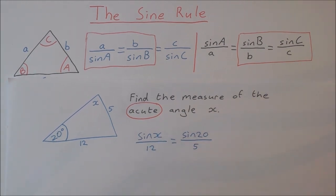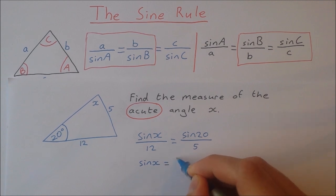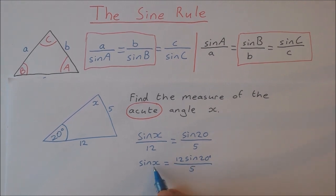Okay I'm going to work to isolate x before I do anything on the calculator. So I'm going to multiply both sides by 12. Sine x is equal to 12 sine 20 degrees over 5. And if I want to find x I need to get the sine inverse of 12 sine 20 over 5. That will give me x.